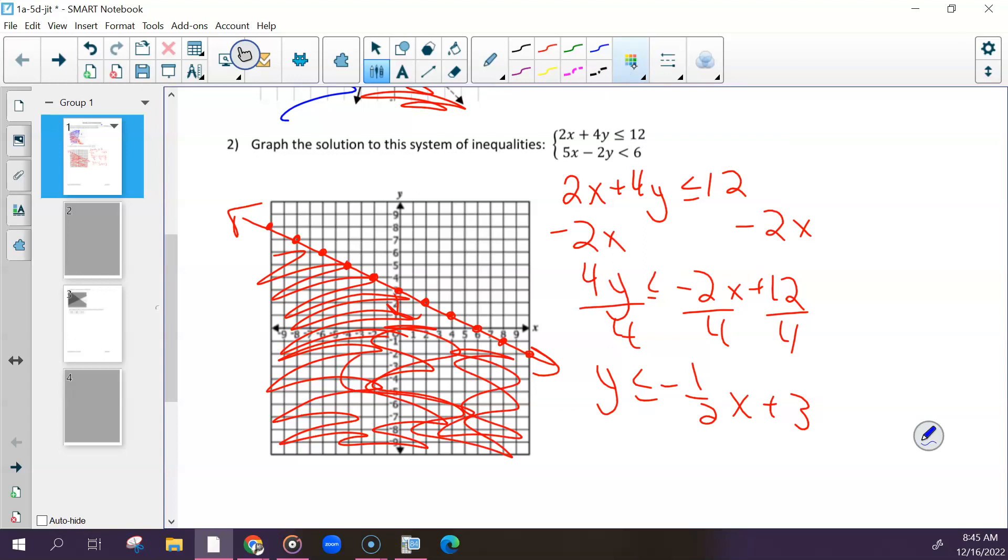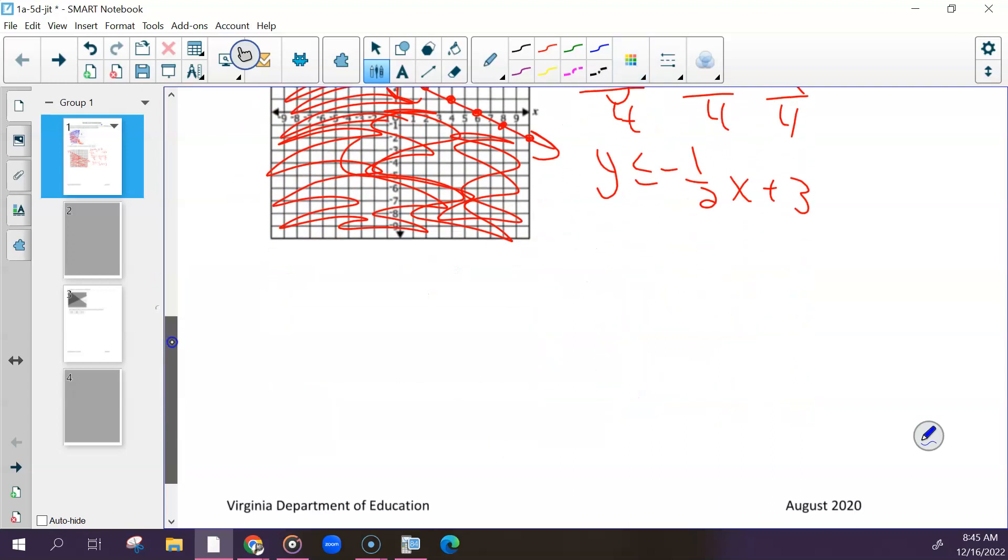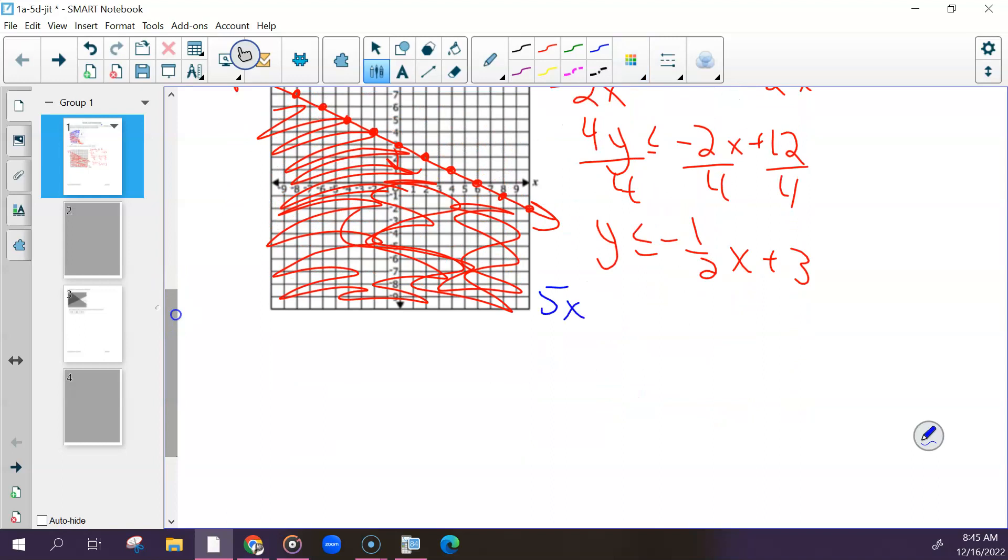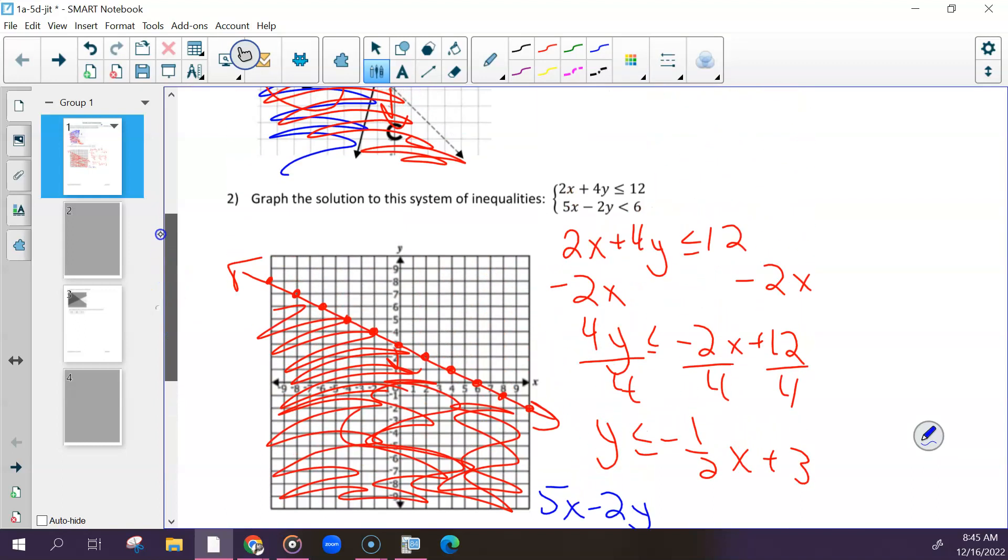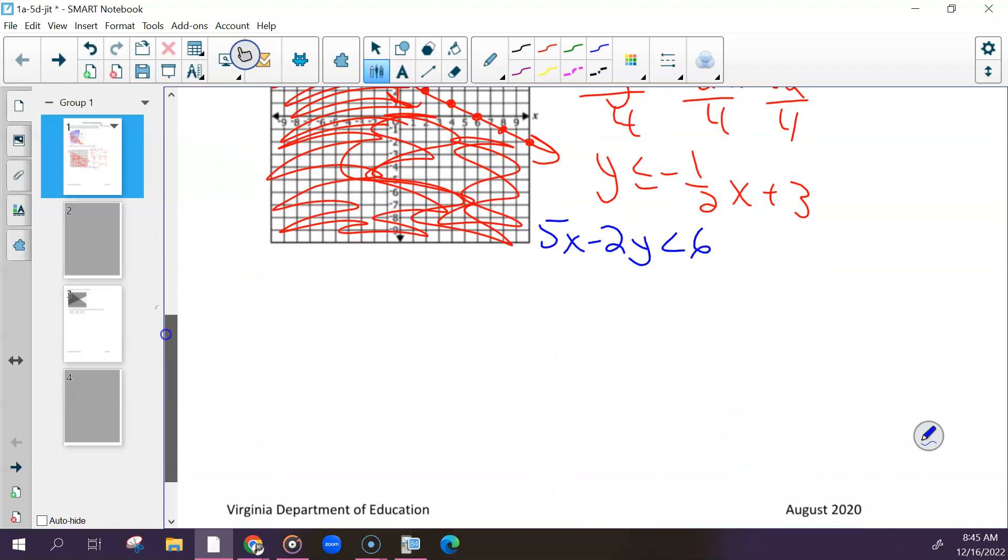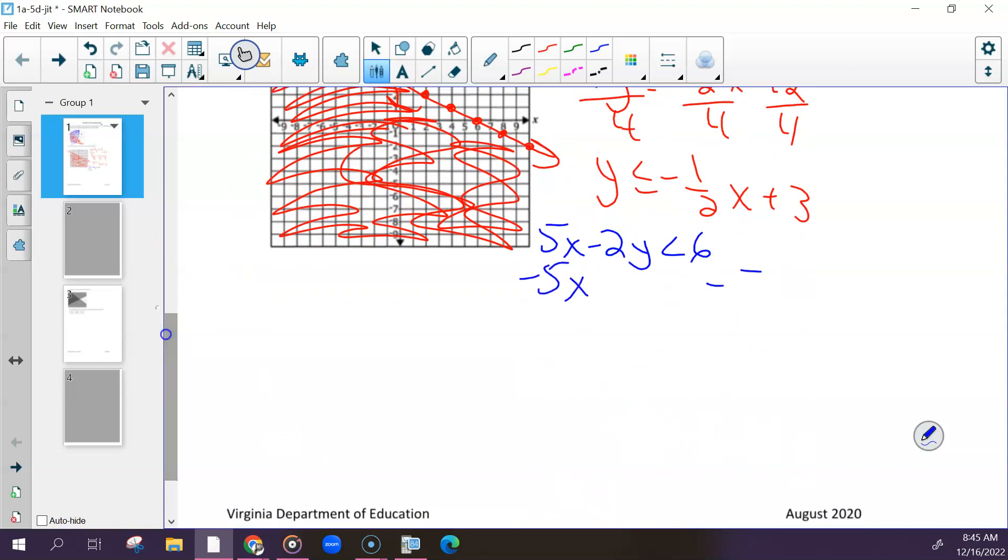And then the other one, subtract your 5x, divide everything by negative 2. Your sign would change, so y is now greater than positive 5 over 2x minus 3.